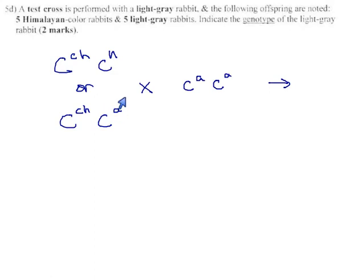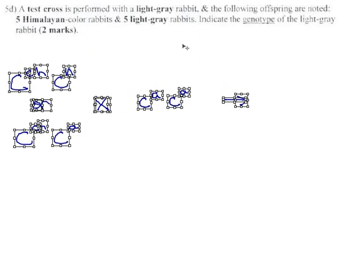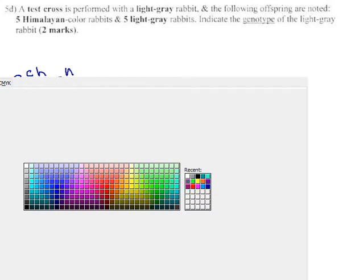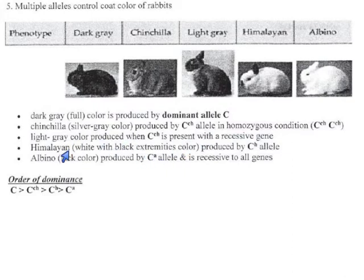From that we'll see what kind of offspring we get, and we think from the offspring we'll be able to tell if the mother is this genotype or this one. So we set that up. The following offspring are noted: there are five Himalayan color rabbits and five light gray. Himalayan is produced by the C^h allele, which is dominant to C^a.